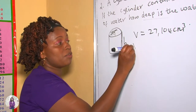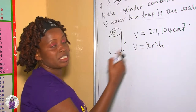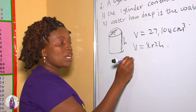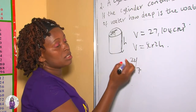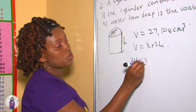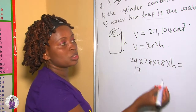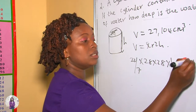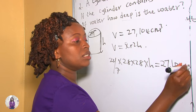Therefore we apply the formula: volume of a cylinder equals π r² h, where h is the height. We replace the given values: 22 over 7 times 28 times 28, multiplied by height that we don't know, to give us a volume of 27,104 centimeters cubed.